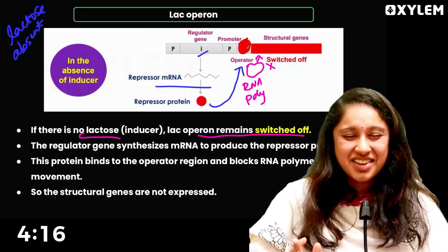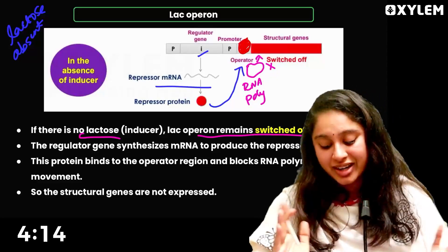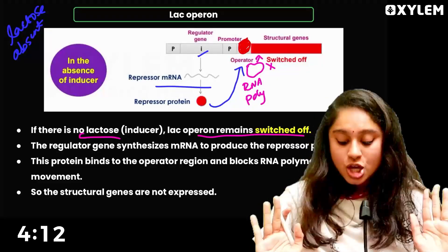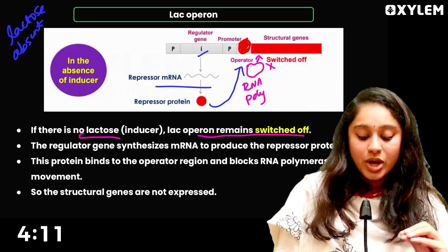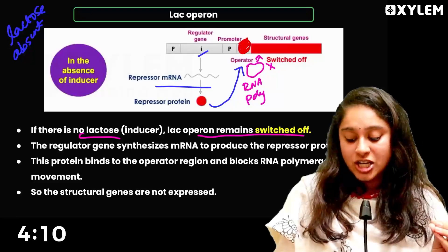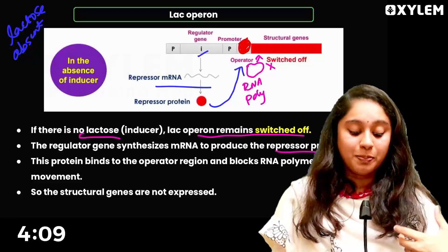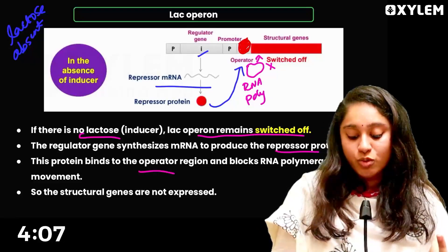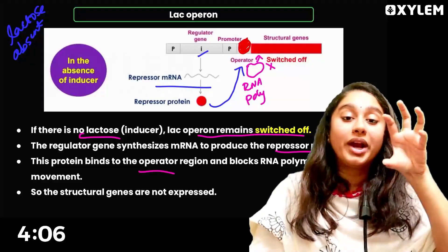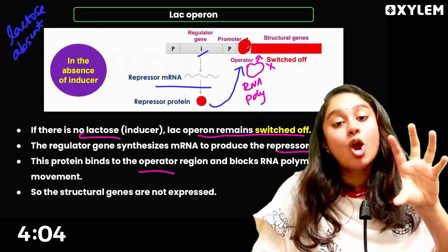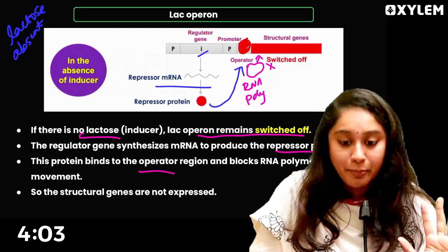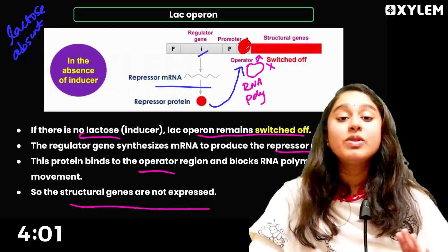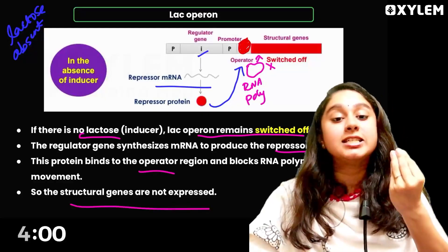The cell conserves its energy by switching off the structural genes. A repressor protein is synthesized which joins the operator region and blocks RNA polymerase, so the structural genes are not expressed.